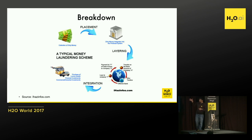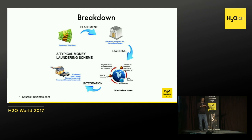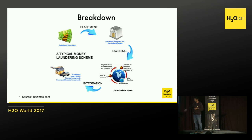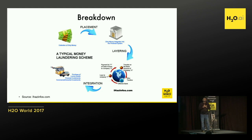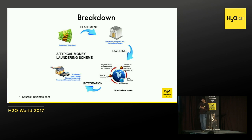Layering is the part which is actually very interesting. The money that comes in is still illegal — it was obtained by illegal means. So now you have to create so much cover over it that if someone tries to identify it, they shouldn't be able to figure out that the money was illegally obtained. That is where the source is actually decoupled from the money. You have multiple layers of false information saying this money is coming from a legitimate source.